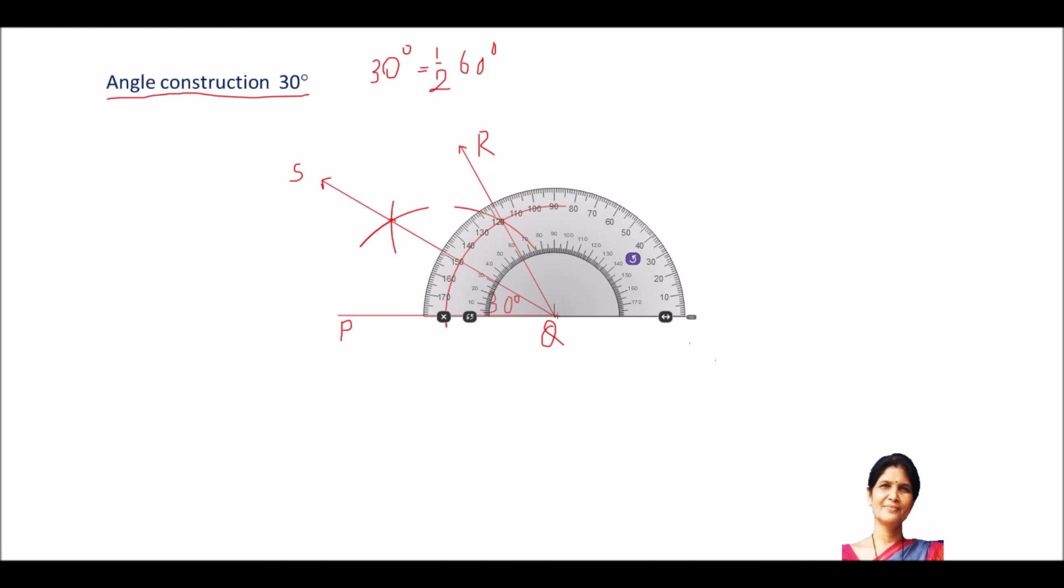Next is verification. Let us take the protractor. Put here. Put the middle of the protractor on Q. And from this 0, you start counting. Are you getting 30 degree? Just see, just see the lower scale, 0, 10, 20, 30. So, you are getting 30 degree. Perfect.